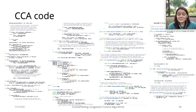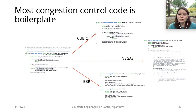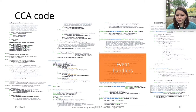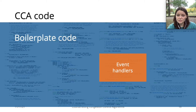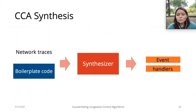The code that implements CCAs on the Linux kernel looks like this, which is a lot of code to synthesize. Fortunately, to define a new CCA, only a small portion of this code is re-implemented. So we focus our synthesis on this portion of the code, which we call event handlers, and the remaining boilerplate code stays fixed. Instead of synthesizing all the CCA code, we move the boilerplate code to the input side and synthesize only the event handlers.